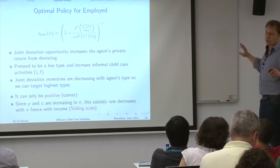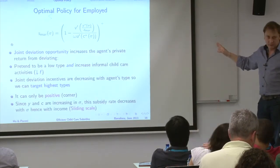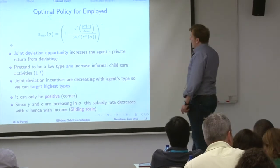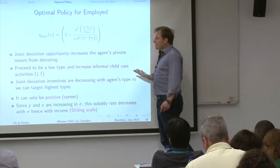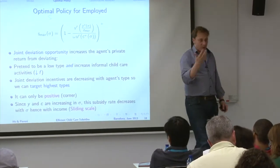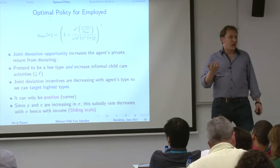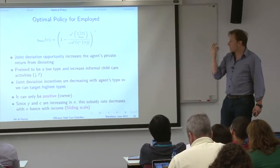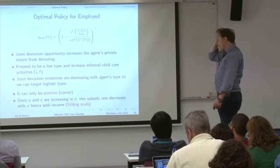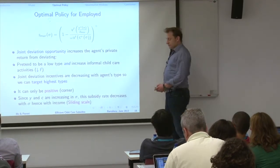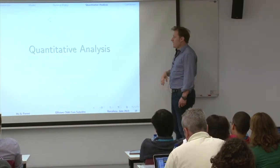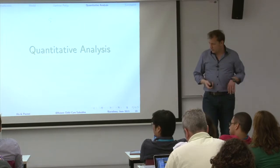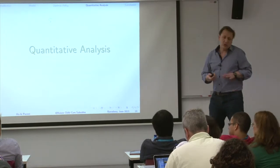So those are the principles: joint deviation, who wants to deviate, and the characteristics of the optimal allocation together give positivity and the sliding scale result. This holds generally unless other aspects of the model change the fact that the top type wants to deviate.